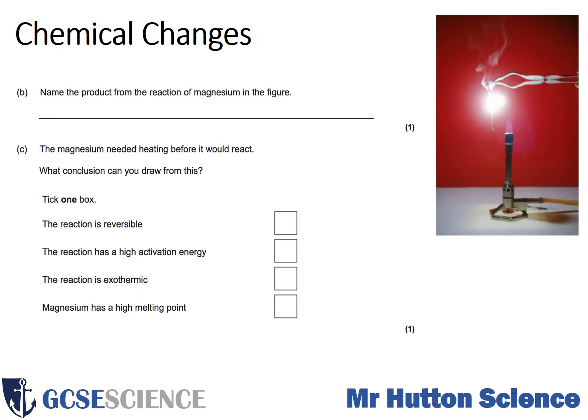The first question has a diagram that accompanies it. You're asked to name the product from the reaction of magnesium shown in the figure. The second part asks: the magnesium needed heating before it would react — what conclusion can you draw from this? There are various options where you tick one of them.